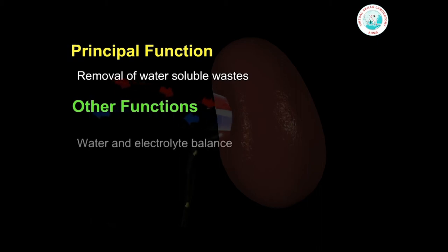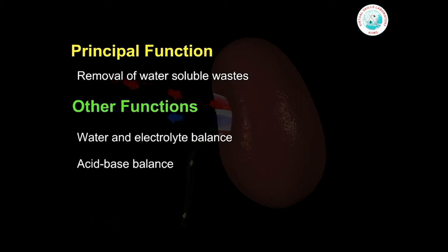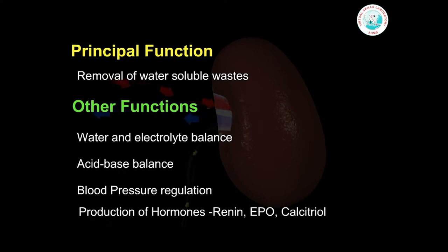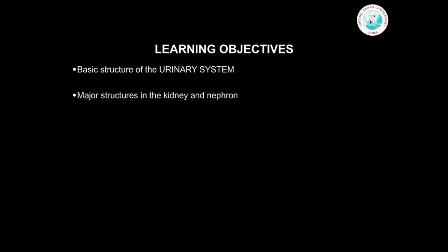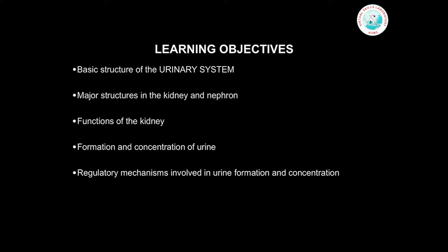Other functions include water and electrolyte balance, acid-base balance, blood pressure regulation and production of hormones that include renin, erythropoietin and calcitriol. By the end of this session, you will be able to describe the basic structure of the urinary system, make a labelled sketch showing major structures of kidney and nephron, list the functions of the kidney, know the processes involved in urine formation and concentration and where they occur, explain the regulatory mechanisms that control these processes, list the renal function tests and describe the gross and microscopic structures of the ureter, urinary bladder and the urethra.